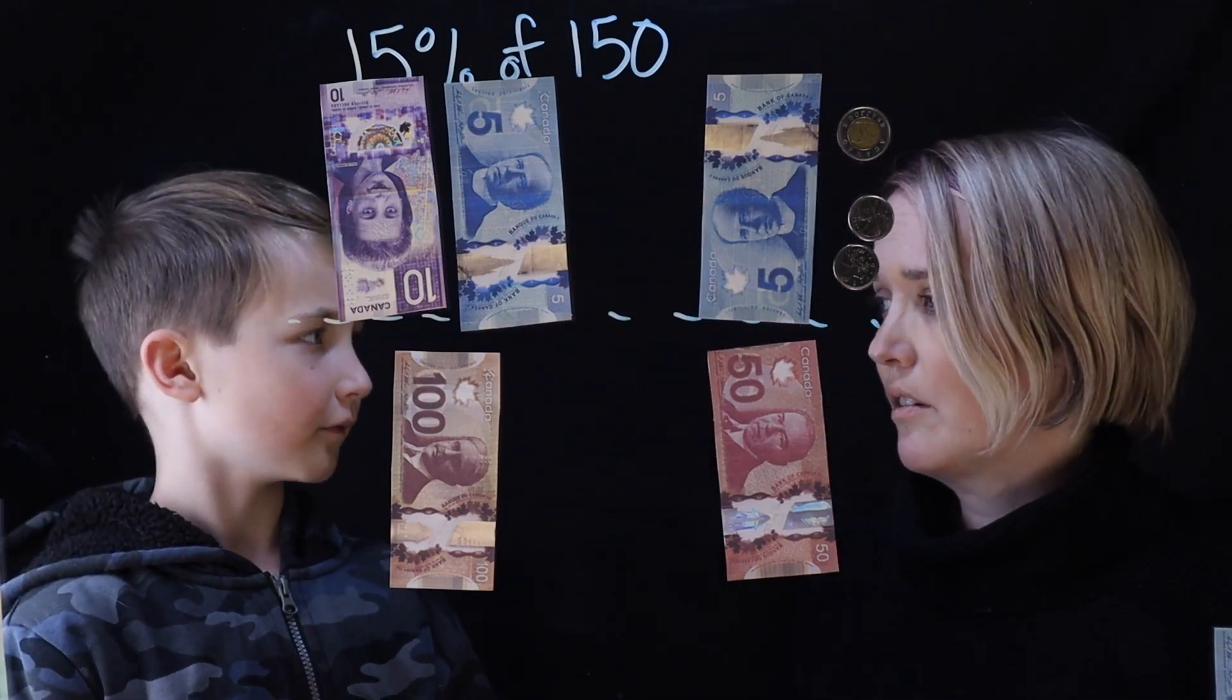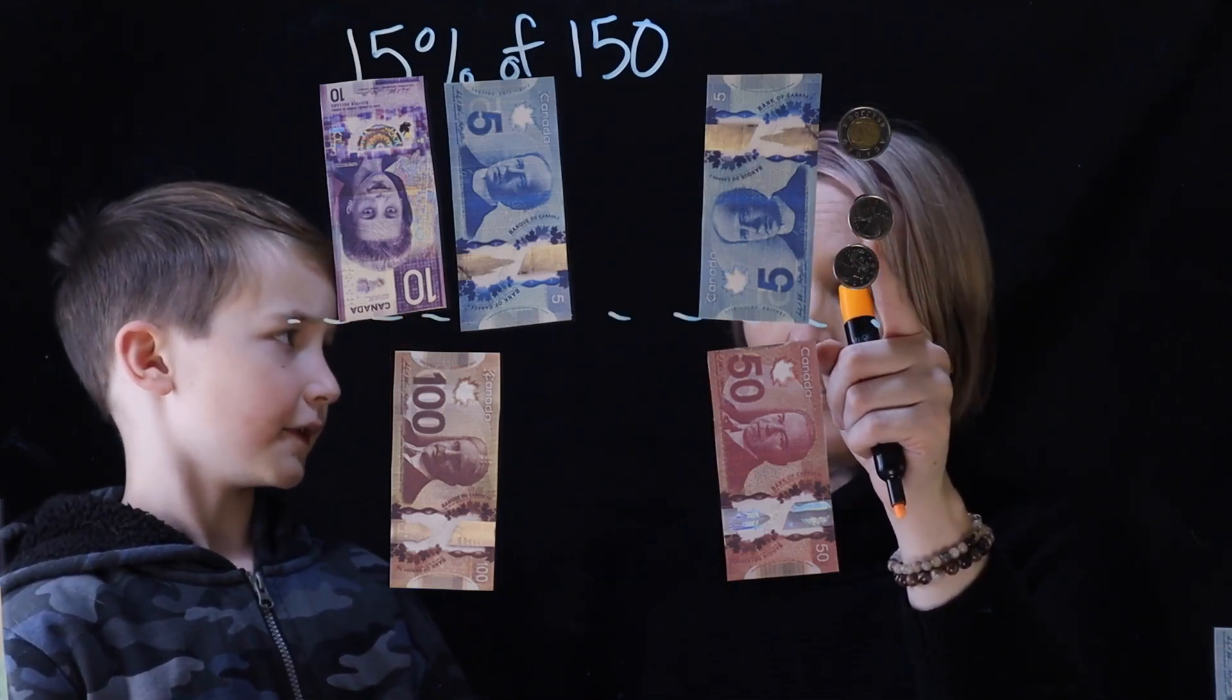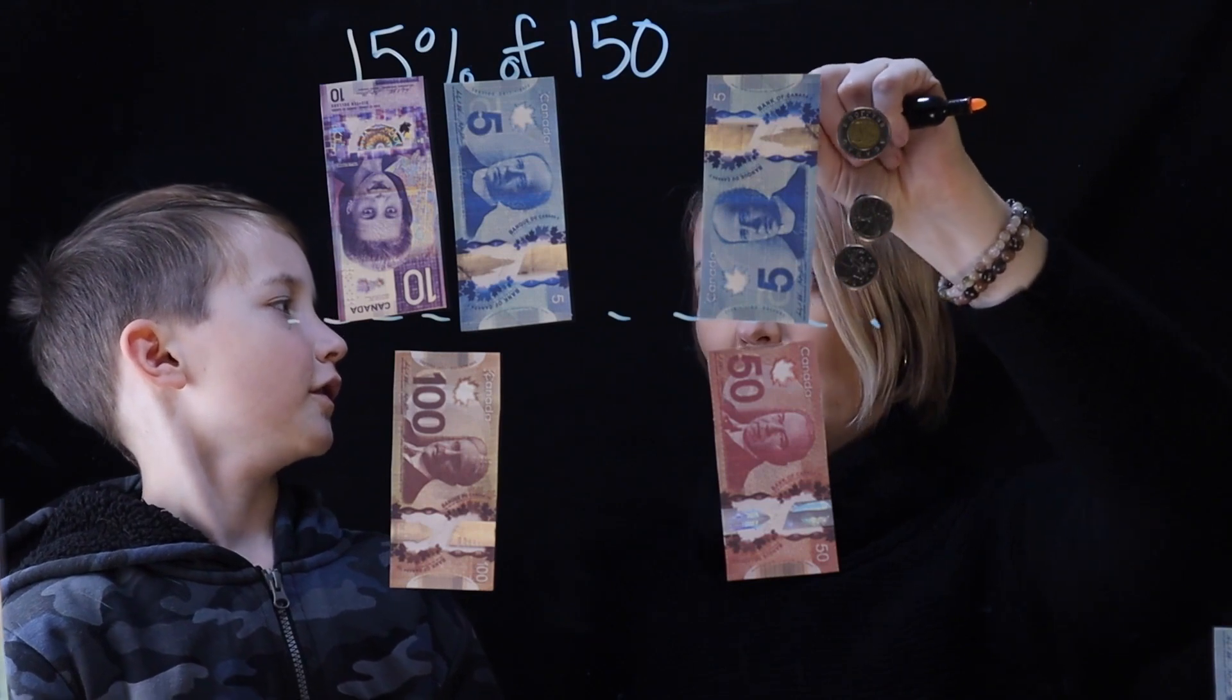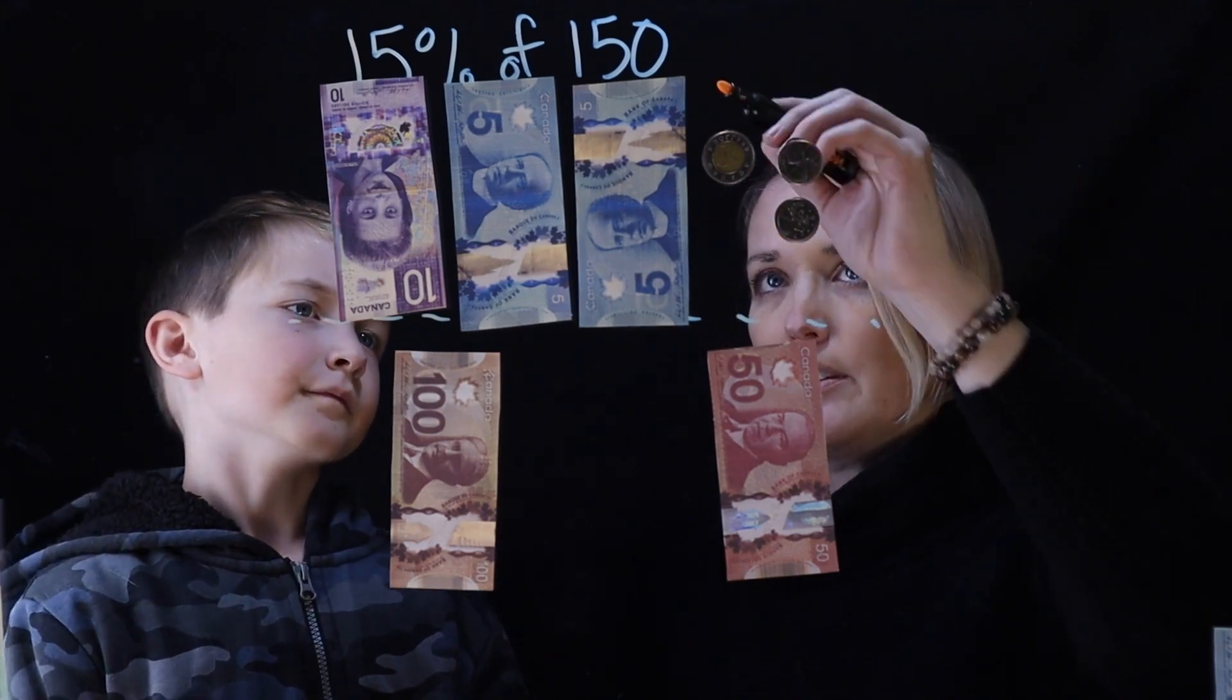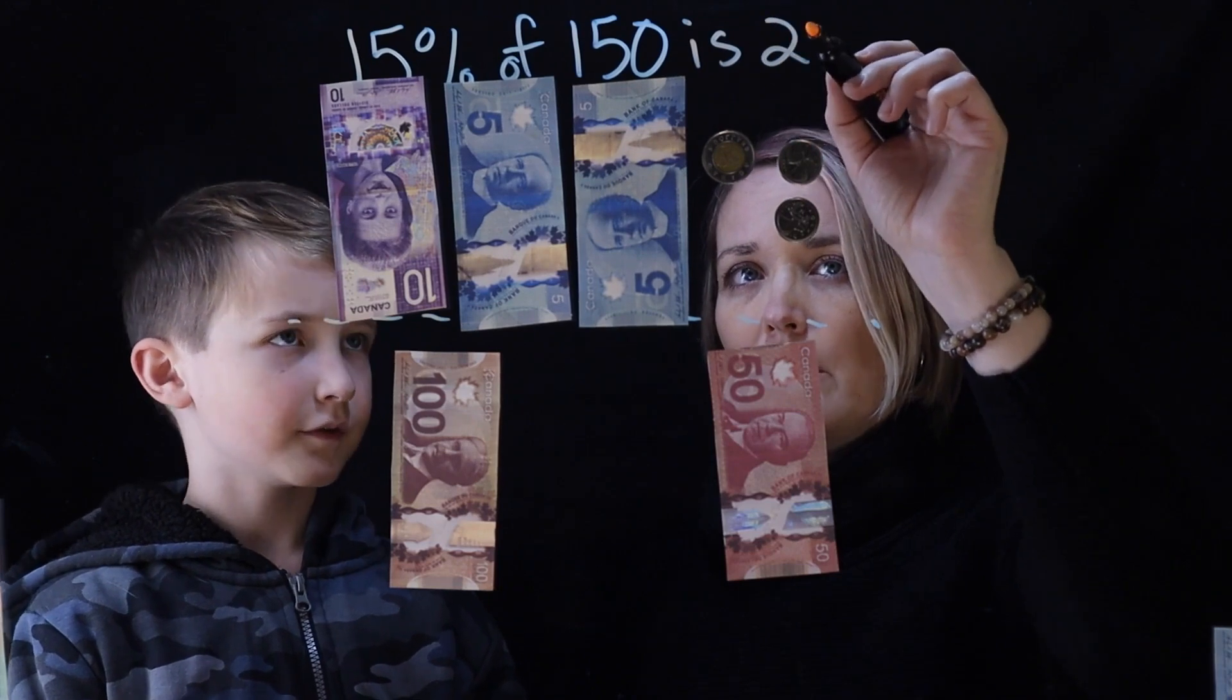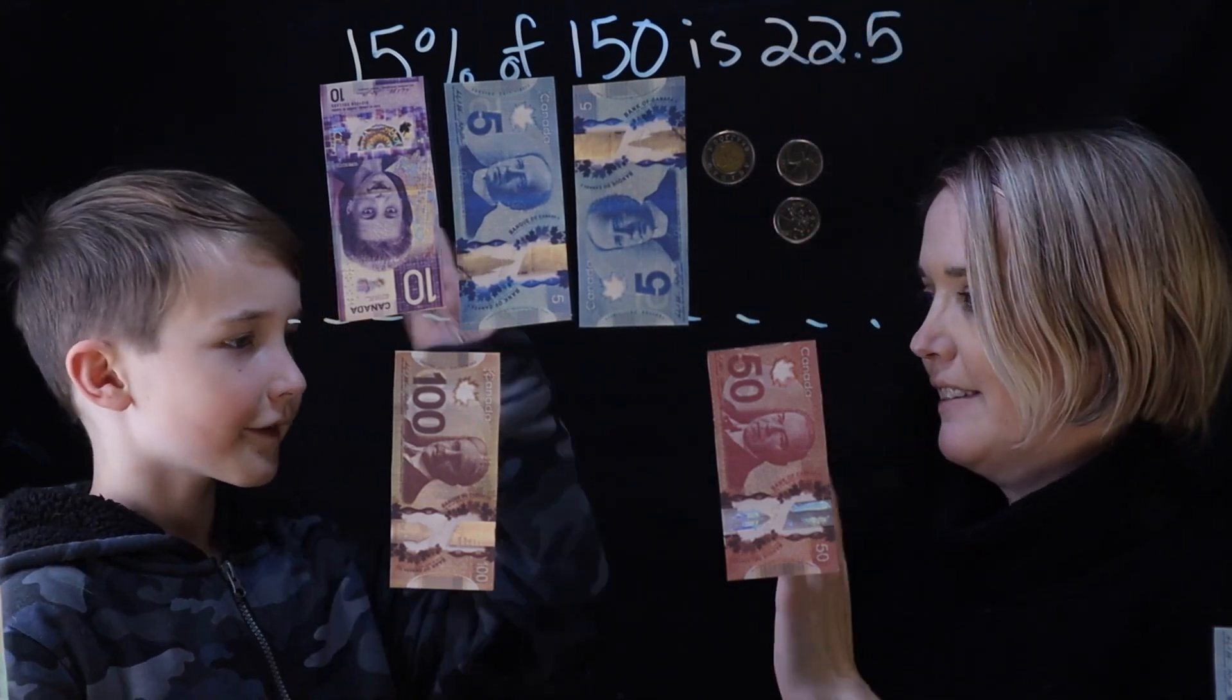How much is that? Well, you have to add 15 and seven dollars and fifty cents together, which is 22.5. So 22.5, and you can see it right here - if I move this over, that's 20, 22, and then 0.5 or 50 cents. So 15 percent of 150 is 22 dollars and 50 cents. That was awesome Lily. Thanks. Bye.